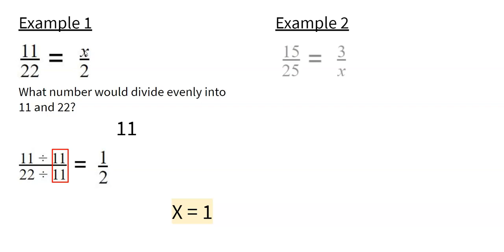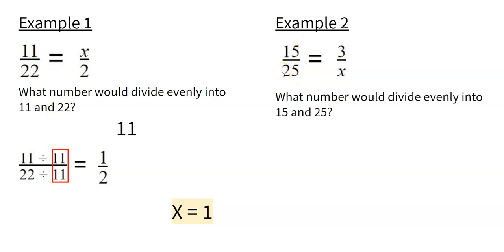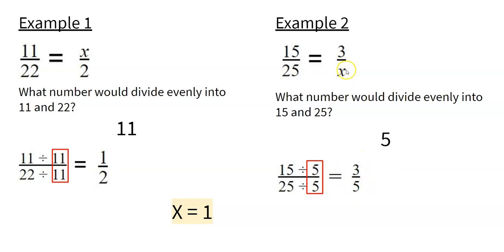Example 2: 15 over 25 is equal to 3 over x. What number divides evenly into 15 and also into 25? That would be 5. 5 goes into 15 three times, and 5 goes into 25 five times. So the fraction reduces to 3 over 5, which looks very similar to the other fraction, so x is equal to 5.